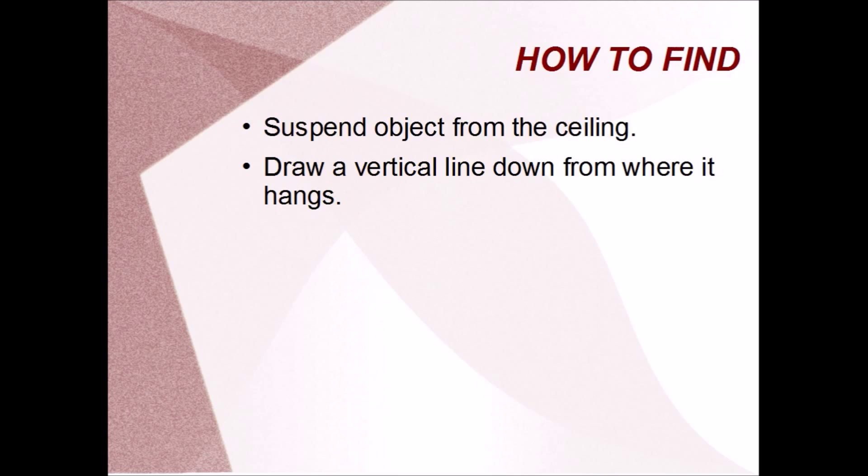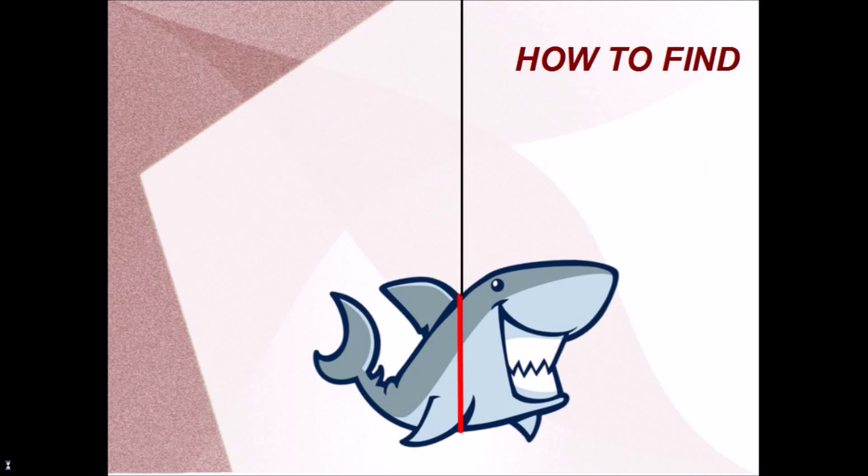How do you find the center of mass of an irregular thing, like a boomerang, or a banana, or a piece of rock? The classic way is to hang it from the ceiling first. The center of mass will always shift, so that it hangs directly under the point of suspension. Then you draw a straight vertical line. This friendly shark is showing you how it's done.